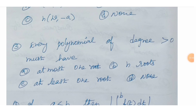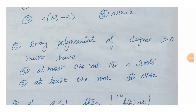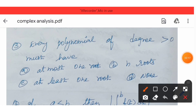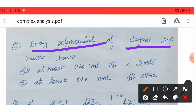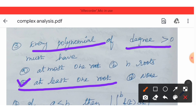Next question: Every polynomial of degree greater than 0 must have — Option A: at most one root, Option B: N roots, Option C: at least one root, Option D: none of these. Option C is the correct answer.